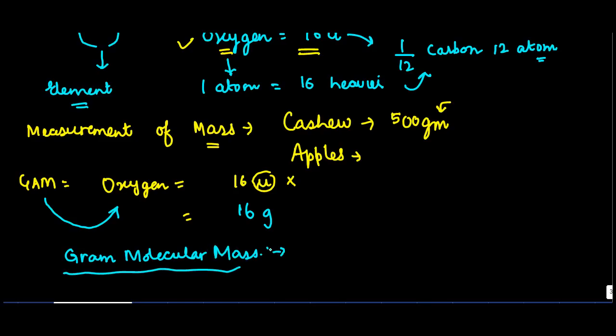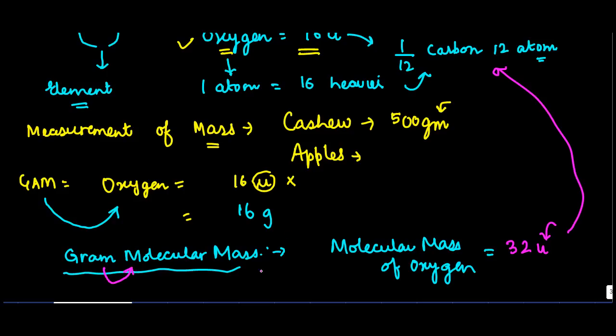Now, even in case of gram molecular mass, if we talk about, let's say again, oxygen only, the molecular mass of oxygen is 32U, where U is again the same thing, one twelfth of carbon-12 atom. The gram molecular mass of oxygen, or for that matter any element, is the molecular mass represented in grams.